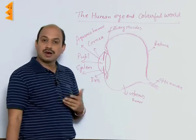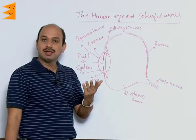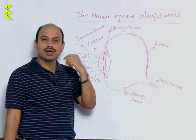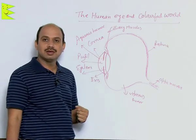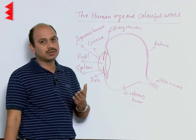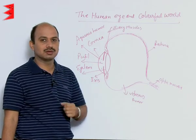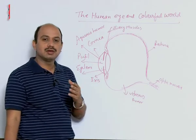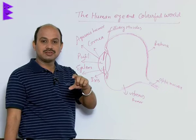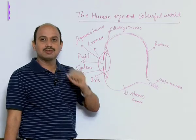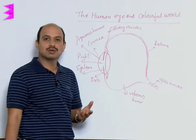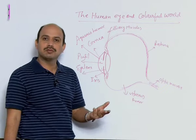The far point of the eye means the maximum distance up to which you can see clearly — that is called the far point. For the normal eye, the far point is infinity. The near point means the minimum distance up to which you can see clearly — that is 25 centimeters, and that is called the near point of the human eye.